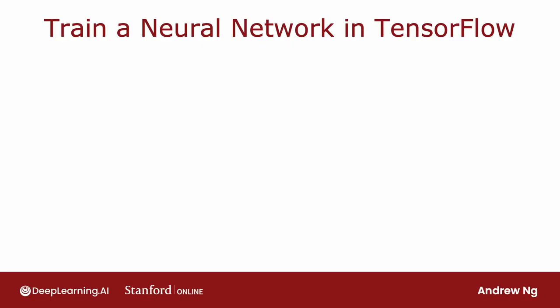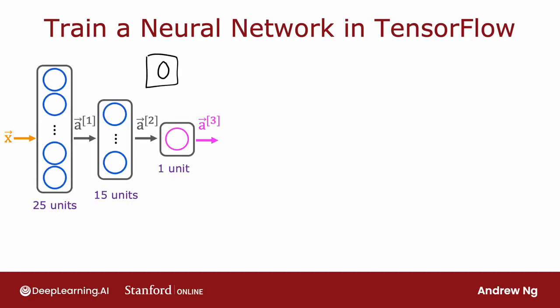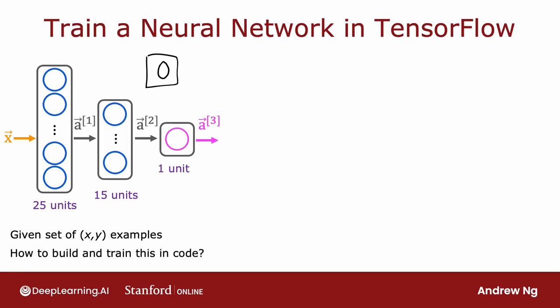Let's dive in. Let's continue with our running example of handwritten digit recognition, recognizing this image as zero or a one. Here, we're using the neural network architecture that you saw last week, where you have an input X that is the image, and then the first hidden layer with 25 units, second hidden layer with 15 units, and then one output unit. If you are given a training set of examples comprising images X, as well as the ground truth label Y, how would you train the parameters of this neural network?